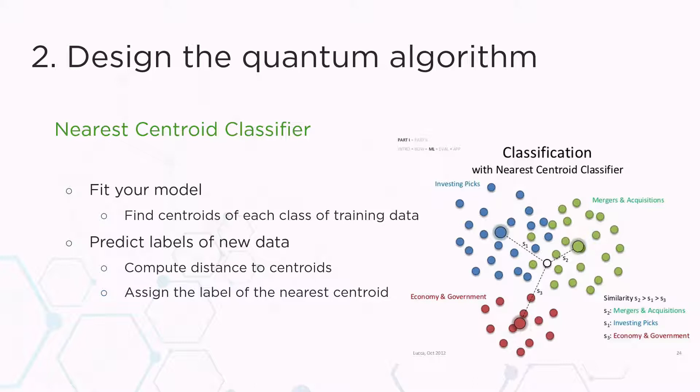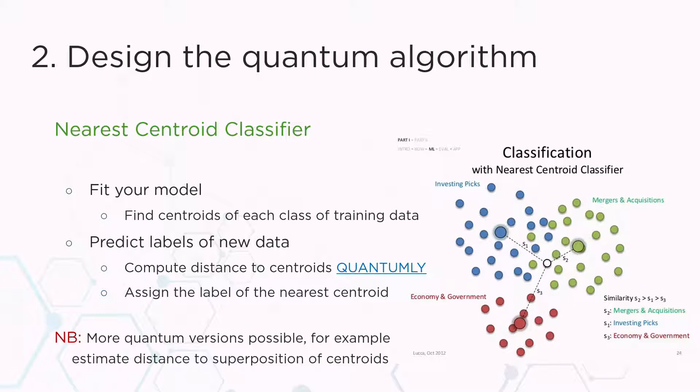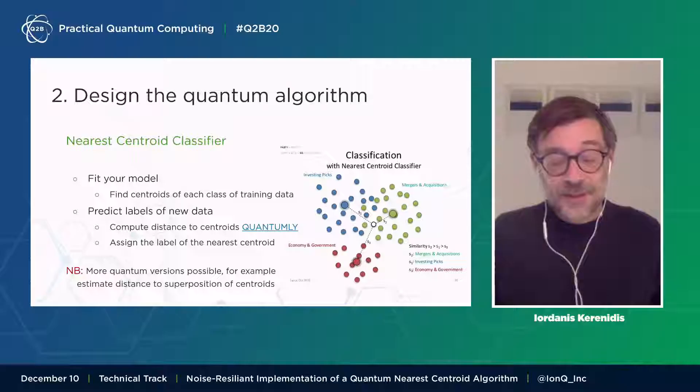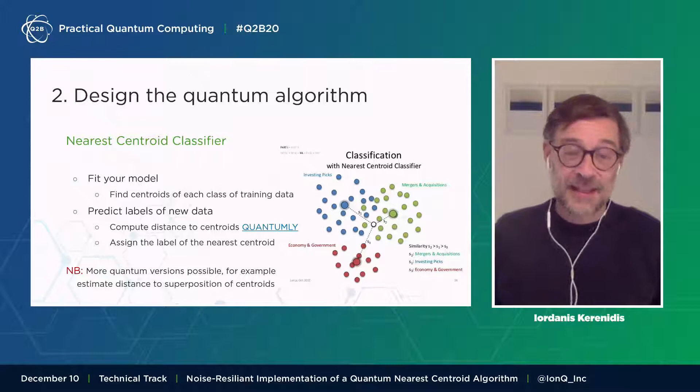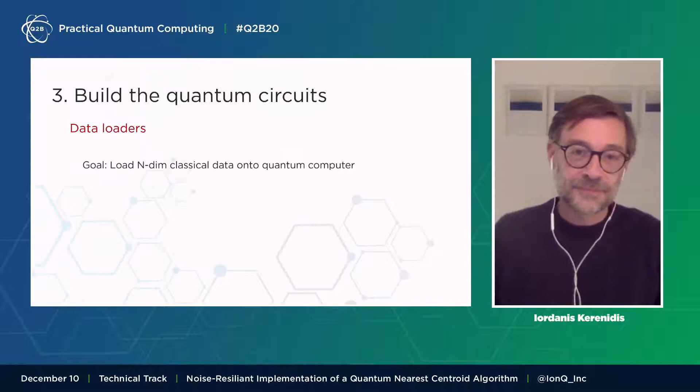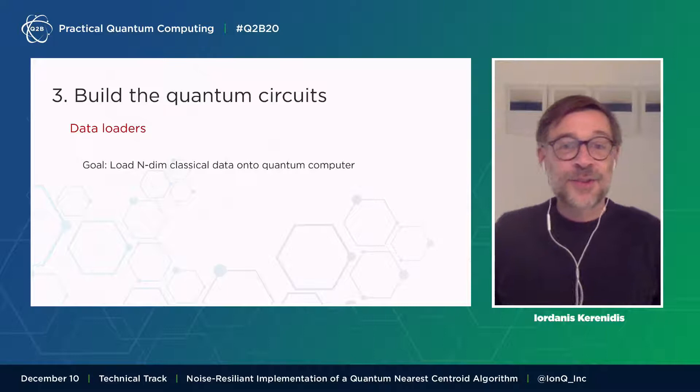When we want to start using quantum computing in order to create an advantage for this problem, one step where we can do something quantumly is exactly this computing the distances between the points and the centroids. Of course, we can do more quantum stuff. And for example, instead of estimating quantumly the distance between the point and each one of the centroid, we can also think of cases where we can have a superposition of the centroids and compute the distance in a more quantum way. These quantum ways can offer actually bigger advantages, but also they need better hardware.